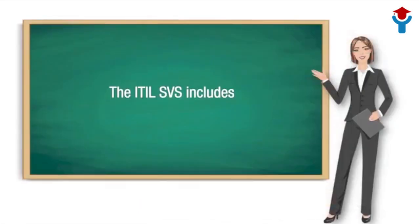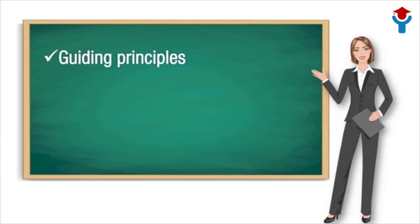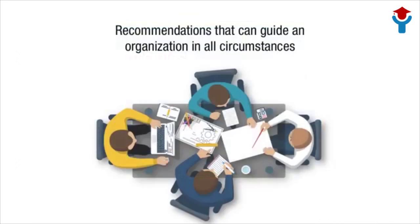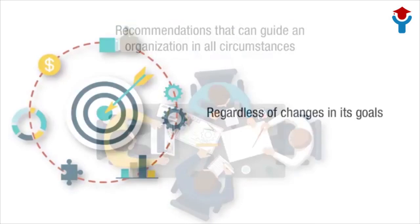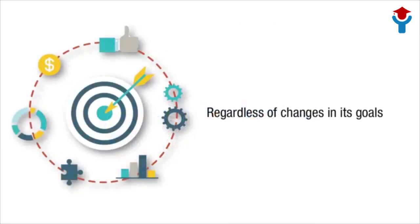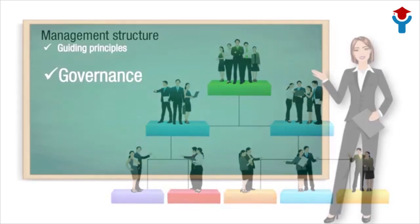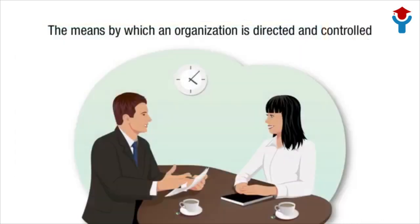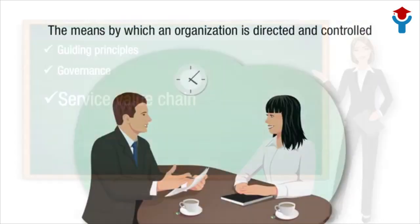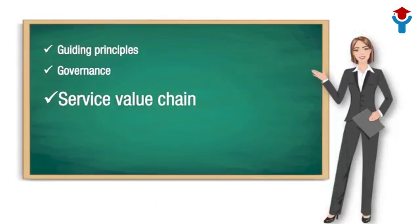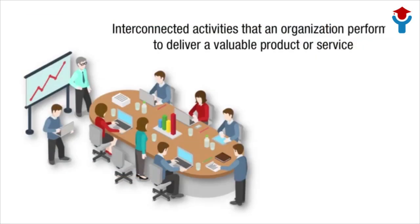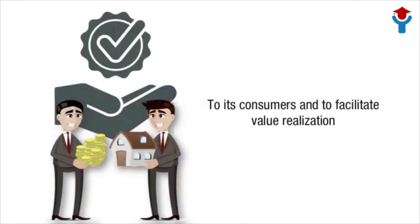The ITIL SVS includes the following components. Guiding Principles: recommendations that can guide an organization in all circumstances, regardless of changes in its goals, strategies, type of work, or management structure. Governance: the means by which an organization is directed and controlled. Service Value Chain: a set of interconnected activities that an organization performs to deliver a valuable product or service to its consumers and to facilitate value realization.